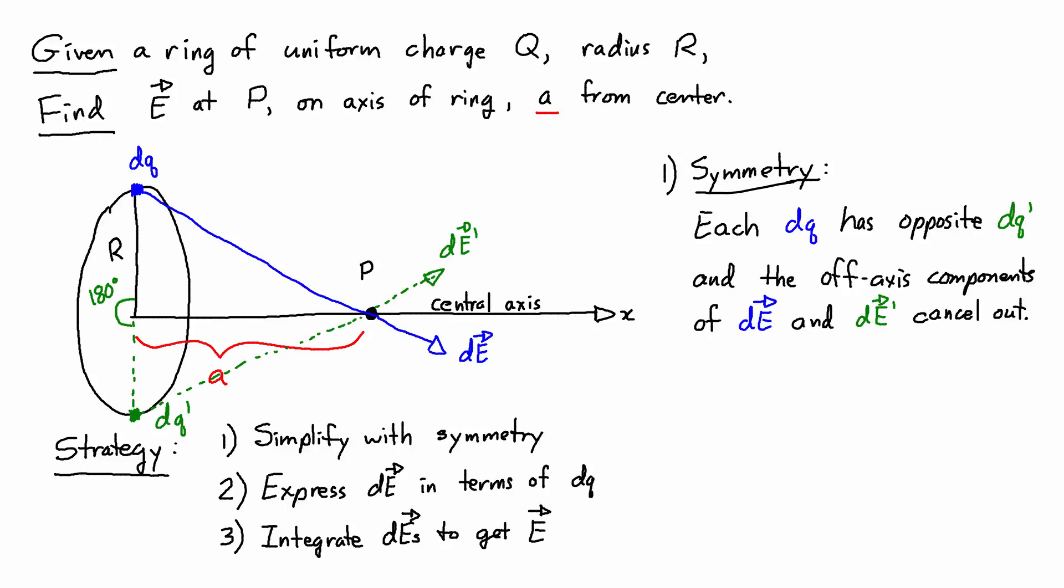Therefore, when I add up all of the little pieces of dE in step two, all of the components that are not along the central axis cancel out, and that means that the electric field is only along the central axis, and I can ignore the off-axis components entirely. The reason to look at symmetry first is basically because it means that I can ignore everything in what would be the y and z axes.